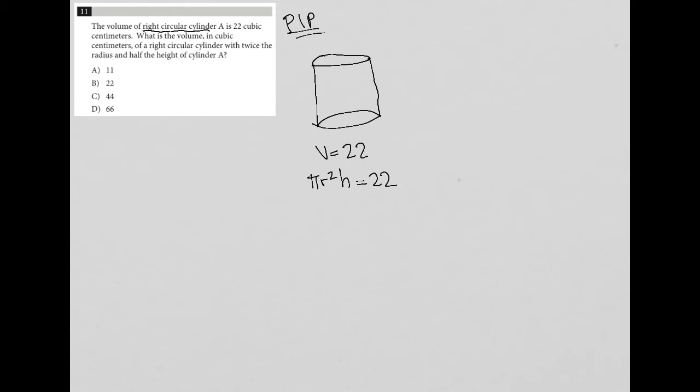Then it asks, what is the volume in cubic centimeters of a right circular cylinder with twice the radius and half the height of cylinder A? Let's draw another right circular cylinder. This radius is R, but this radius would be 2R. If this is H for height, then the height of this cylinder would be half the height, or H divided by 2.